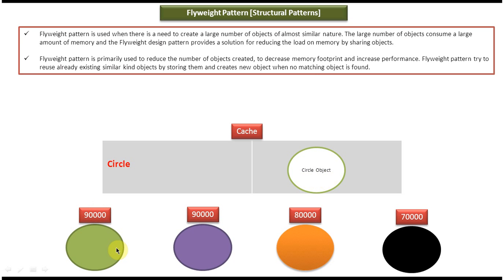Suppose I want to create 90,000 green color circle objects. Instead of creating a new circle object every time and filling green color, what I can do is get the circle object from the hash and fill it with green color. Like that I can create 90,000 circle objects. In this way I can improve performance and I don't need to create multiple circle objects, which would occupy memory and decrease performance.